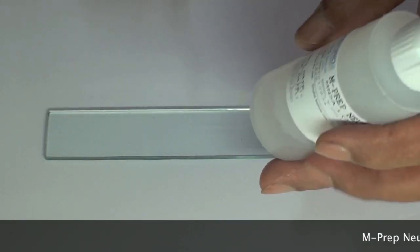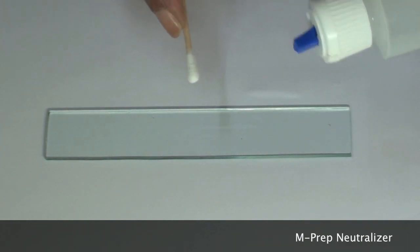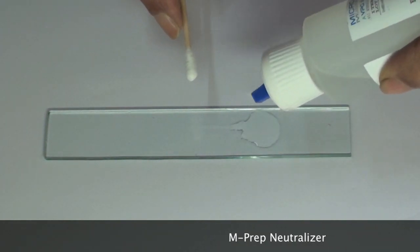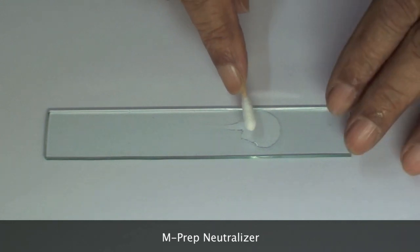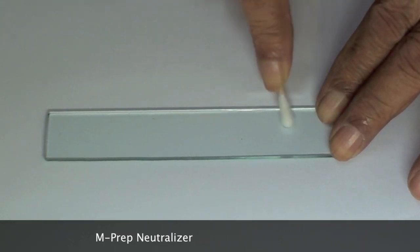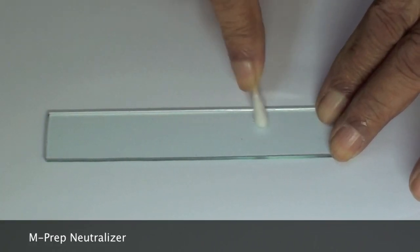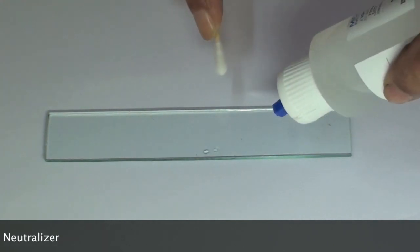Final cleaning is done with neutralizer, an alkaline liquid that neutralizes the acidity on the surface caused by the conditioner. If the neutralizer tends to dry on the surface, more neutralizer should be used while scrubbing.